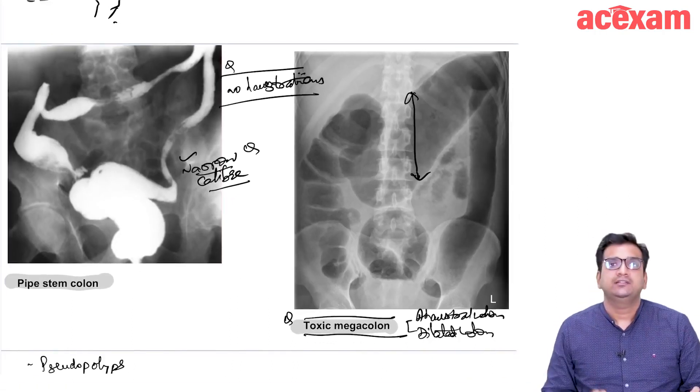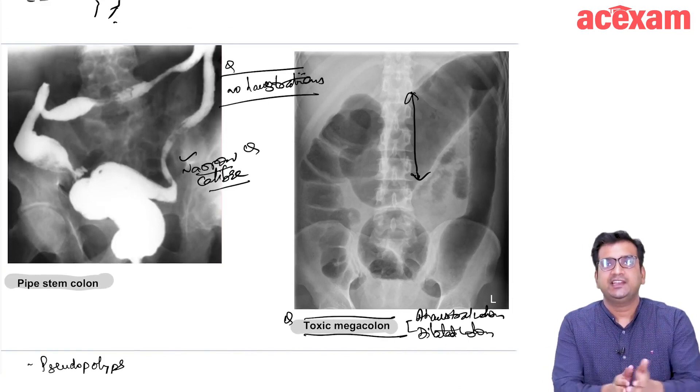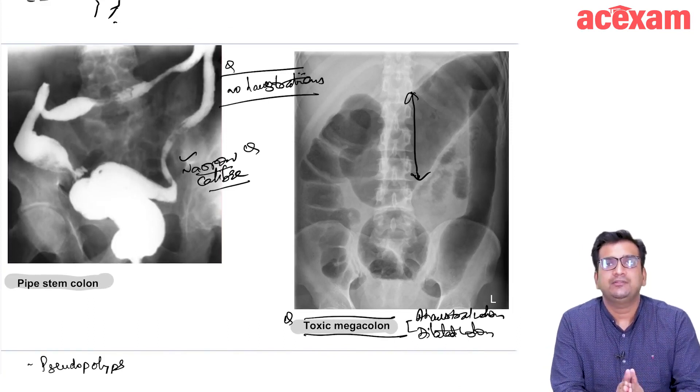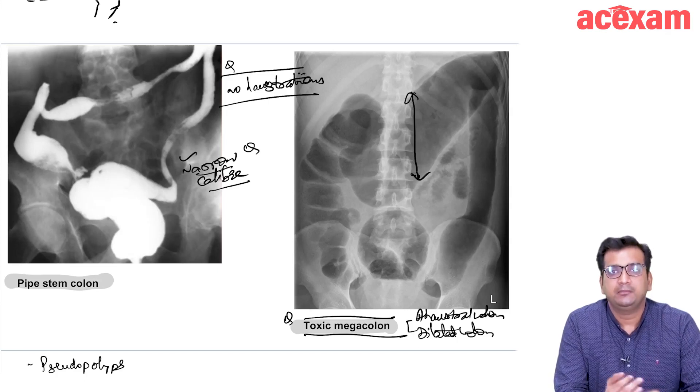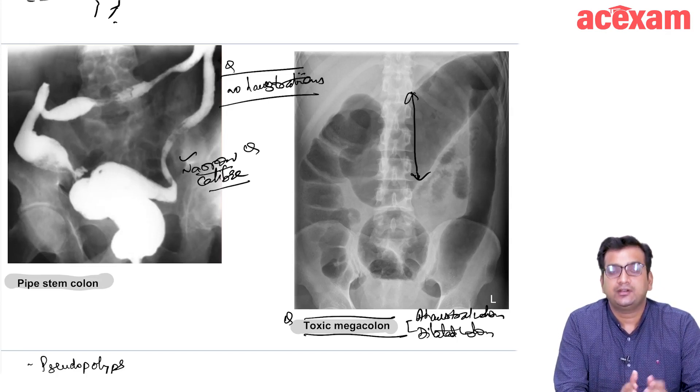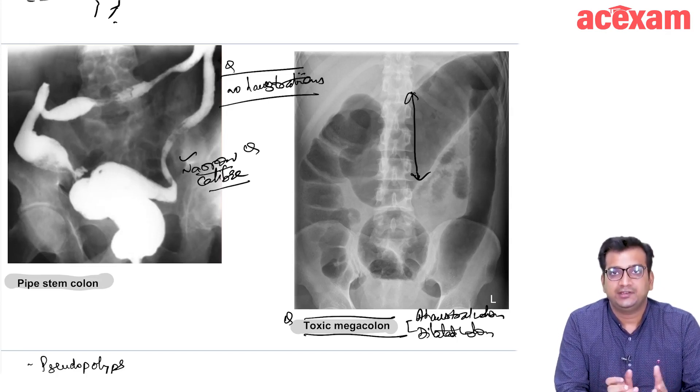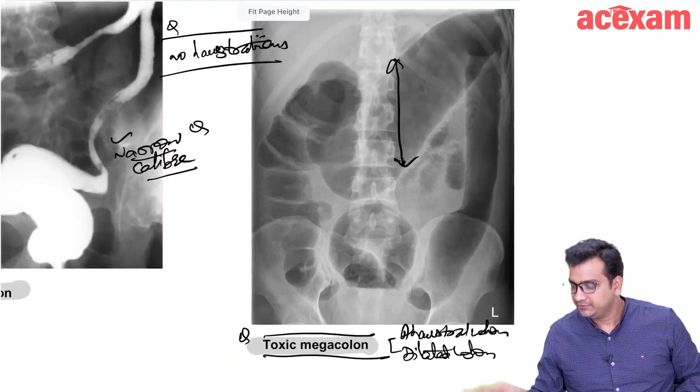Now there is a patient with ulcerative colitis that is admitted in our ward and we are getting the x-ray abdomen done. The patient is admitted with sepsis, complaints of bleeding per rectum, abdominal distension and features of intestinal obstruction or abdominal distension.